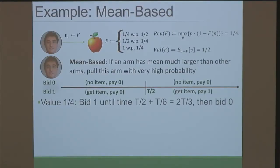Here's the strategy that gets more than one-quarter times T. There are only two bidding options: a zero bid (no item, pay zero), and bid one (always get item). In the first half, you pay zero — like a free trial. In the second half, you pay one. When the value is one-quarter, it's good to bid one in the first half, gaining one-quarter each round. In the second half, you lose three-quarters per round, but you'll still bid one for about T/6 rounds because the average utility of bid one is still better than bid zero. You won't immediately switch.